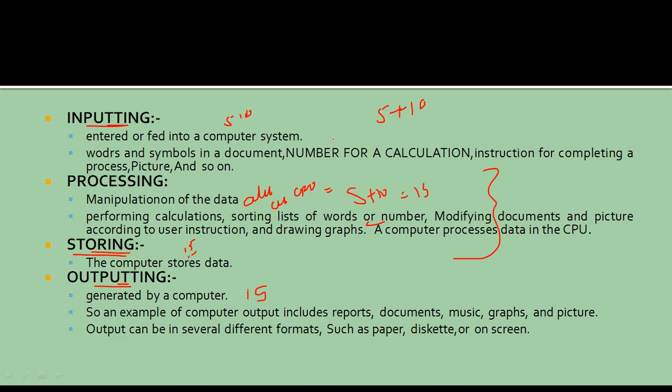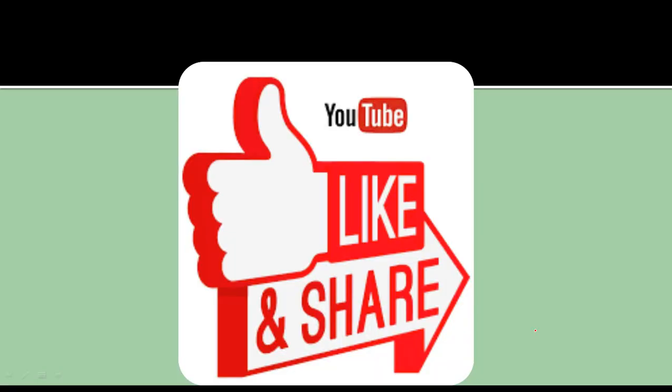In this manner, we learned the input-process-output cycle. I hope you understand this topic well. In the next lecture, we are going to discuss some part of an algorithm and some part of a flowchart. After that, we will start our basic concepts of C theory. Thank you so much.